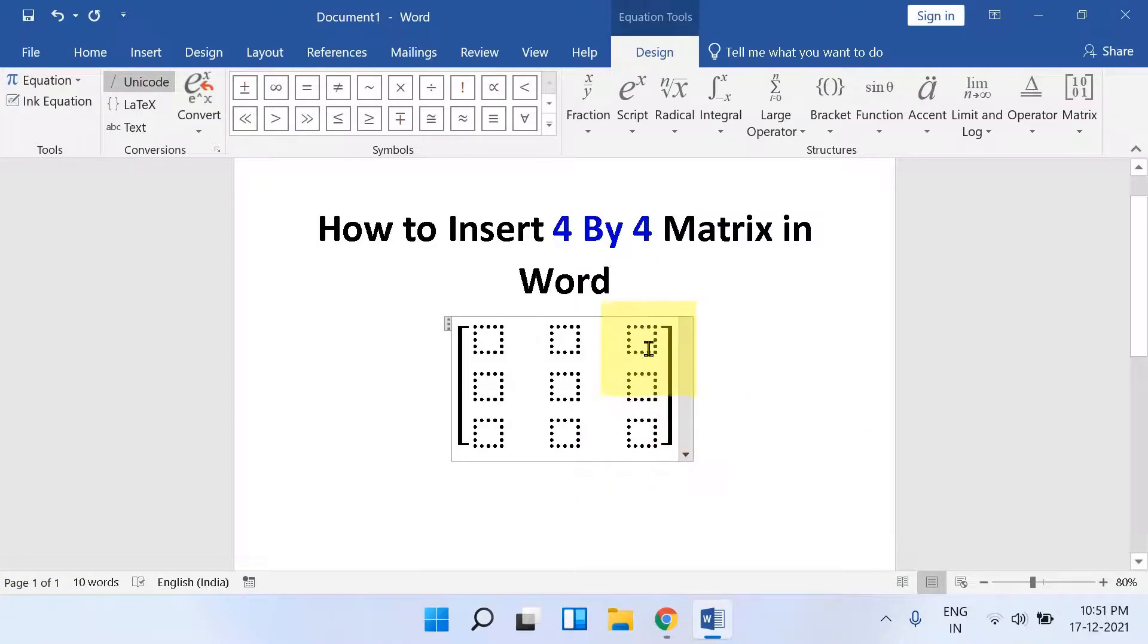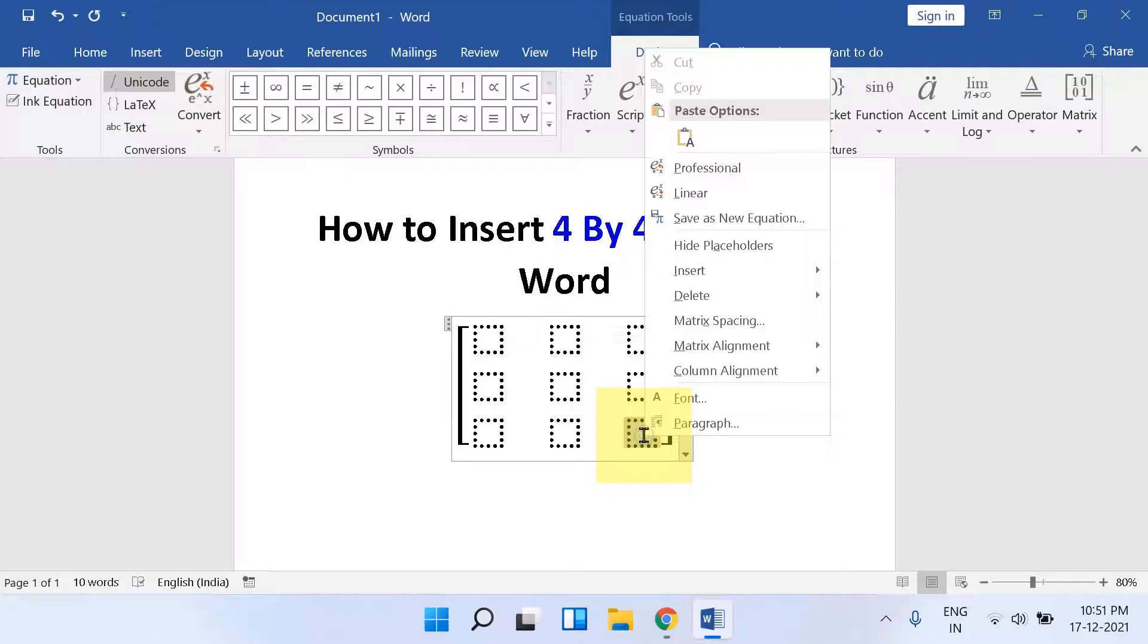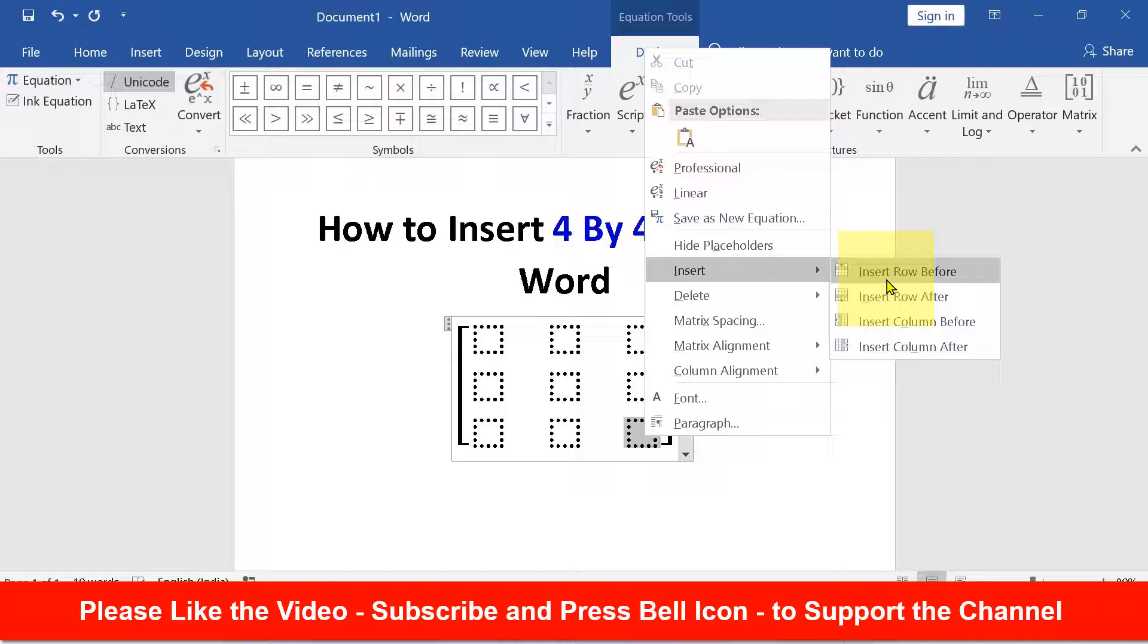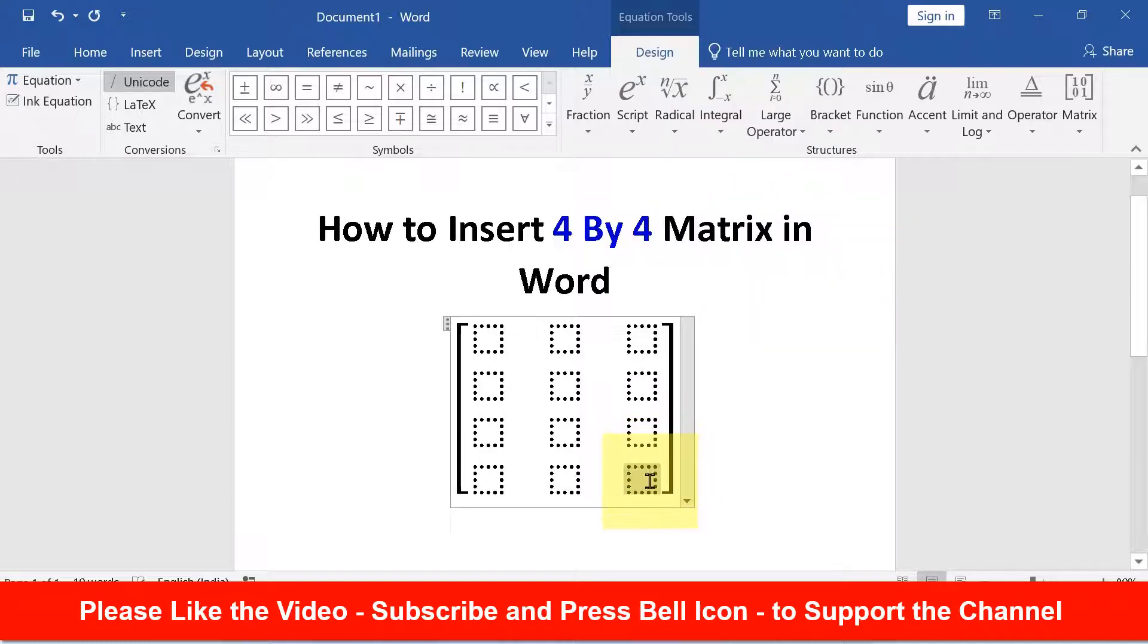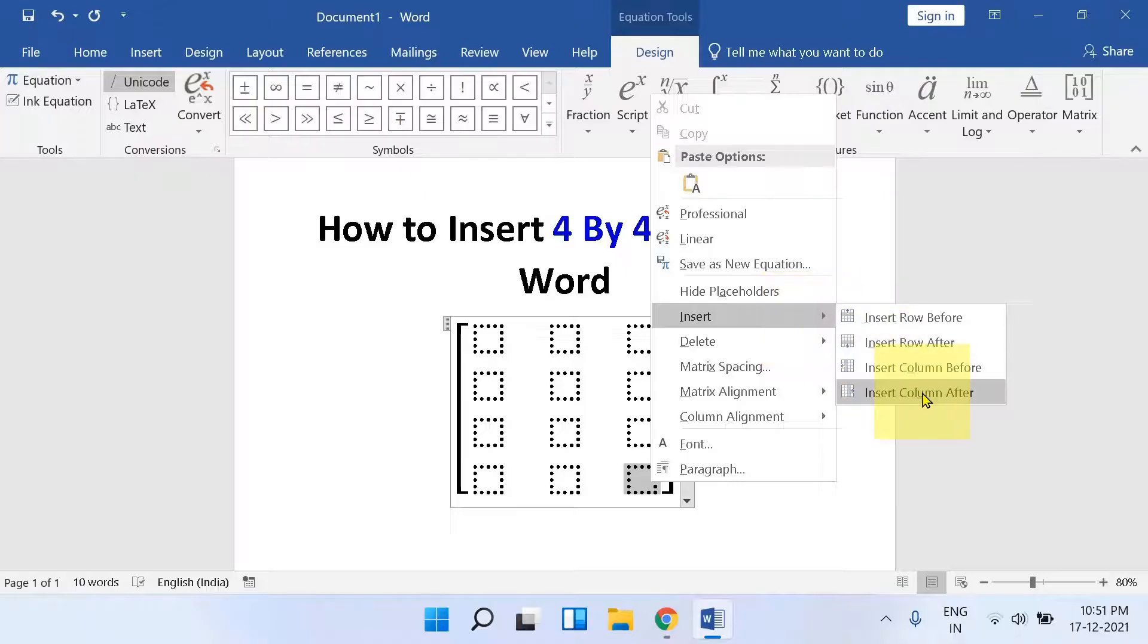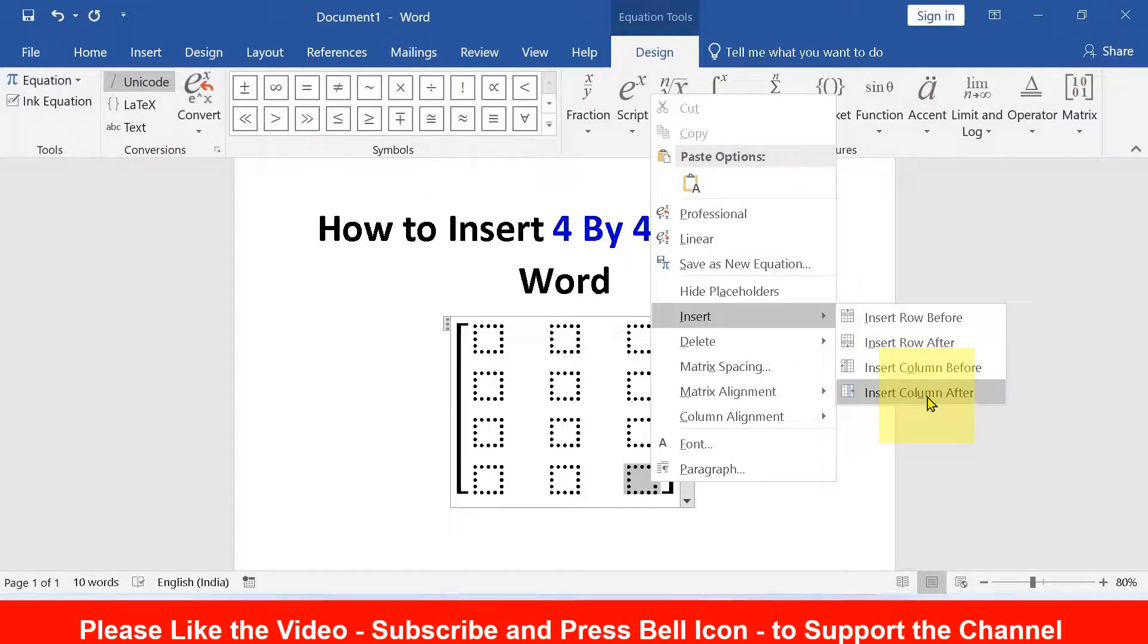Now we will add column and row. To do that, click on the box, right click, you will see here insert option. Click on insert row before, again click on the box and click this time insert column after.